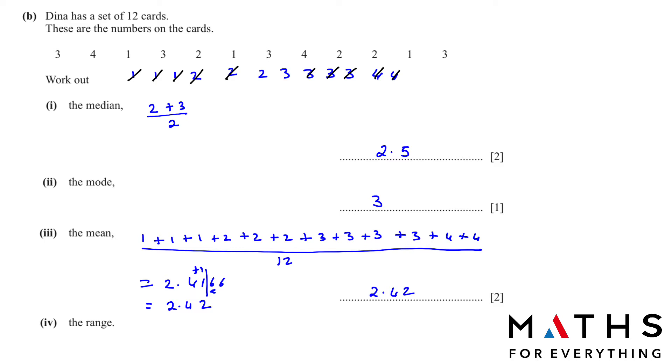To find the range, we take the highest number, which is 4, and from that subtract the lowest number, which is 1. That's it. So for range, highest value subtracting the lowest value.